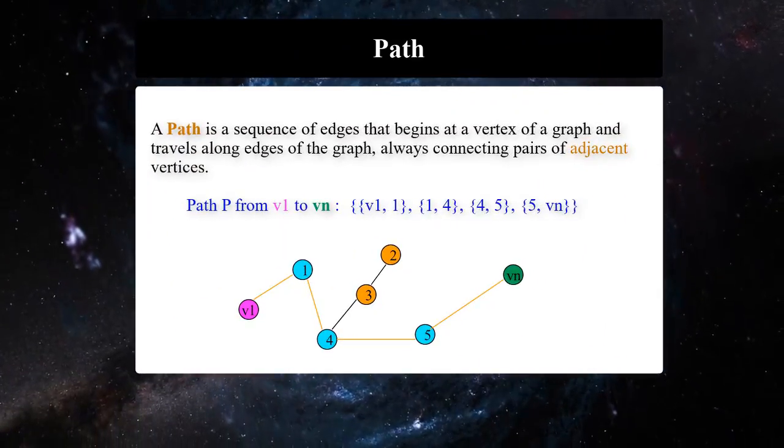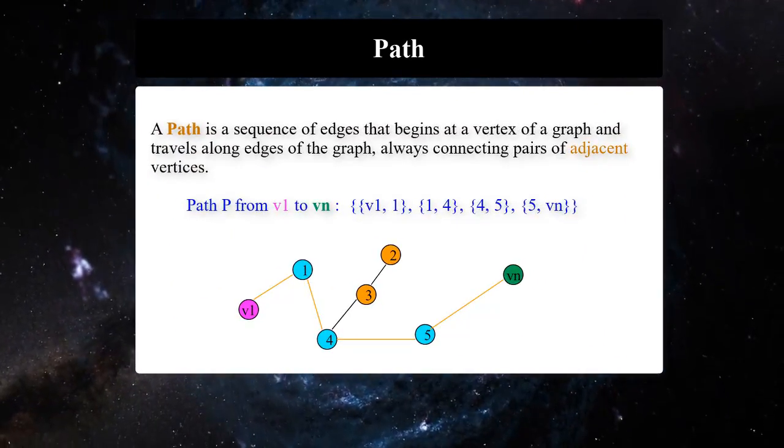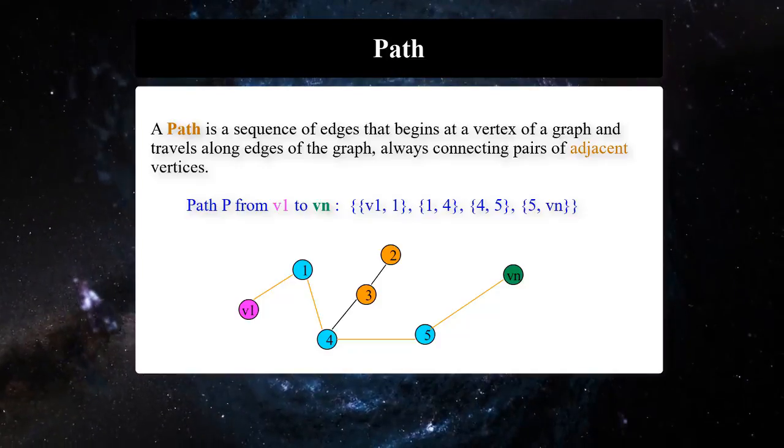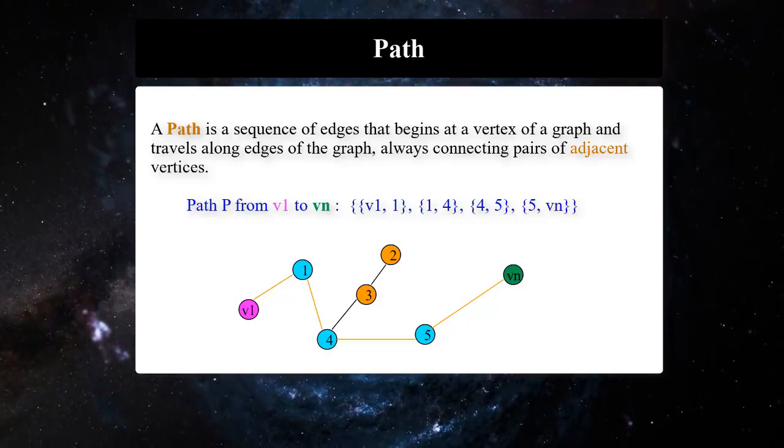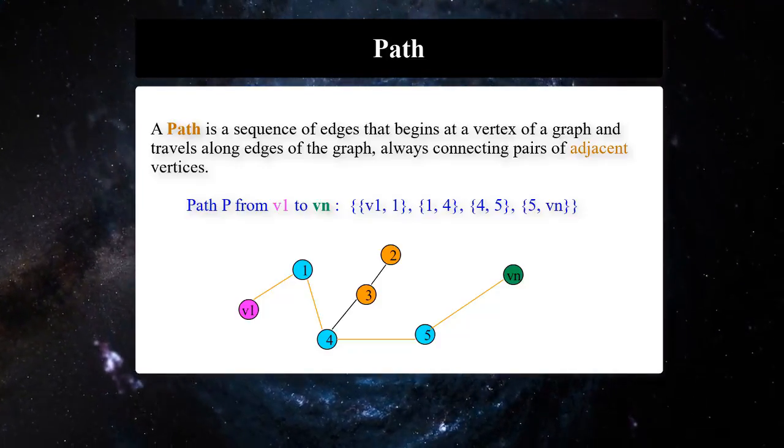A path is a sequence of edges that begins at a vertex of the graph and travels along edges of the graph, always connecting pairs of adjacent vertices.